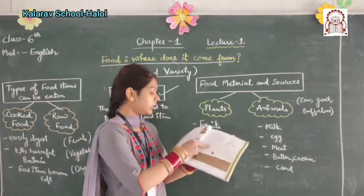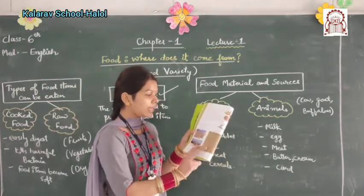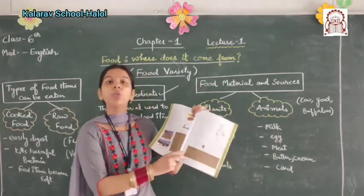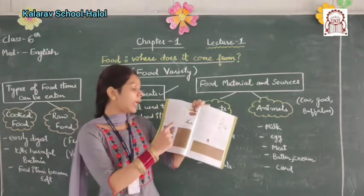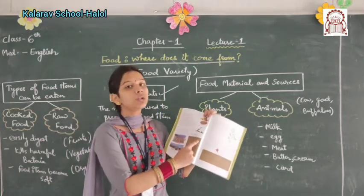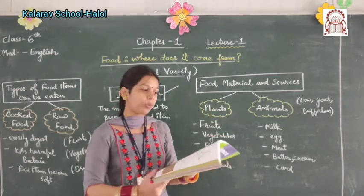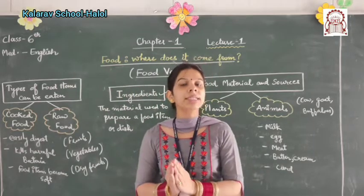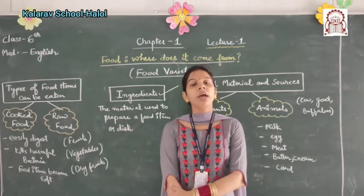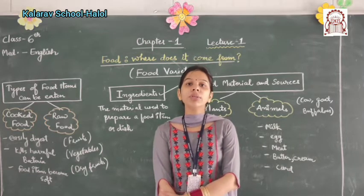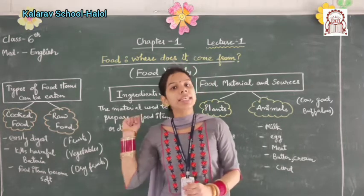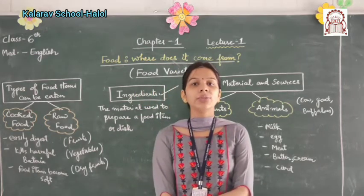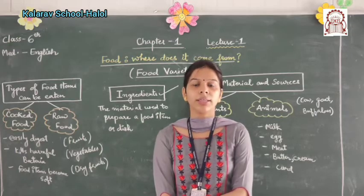Turn to page number 2 and see table 1.3. You have to make a table of food items, ingredients, and the sources from which these foods are obtained. Mainly plants and animals are the sources of food items. I will give you a PDF for these topics. You can write classwork as well as homework in your notebook. Thank you.